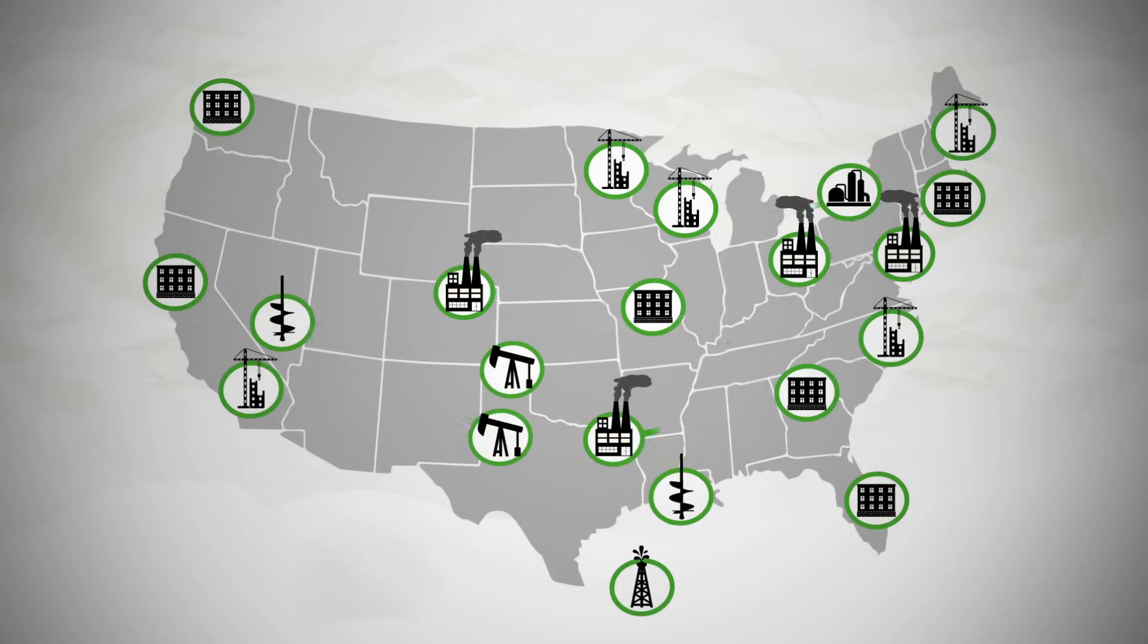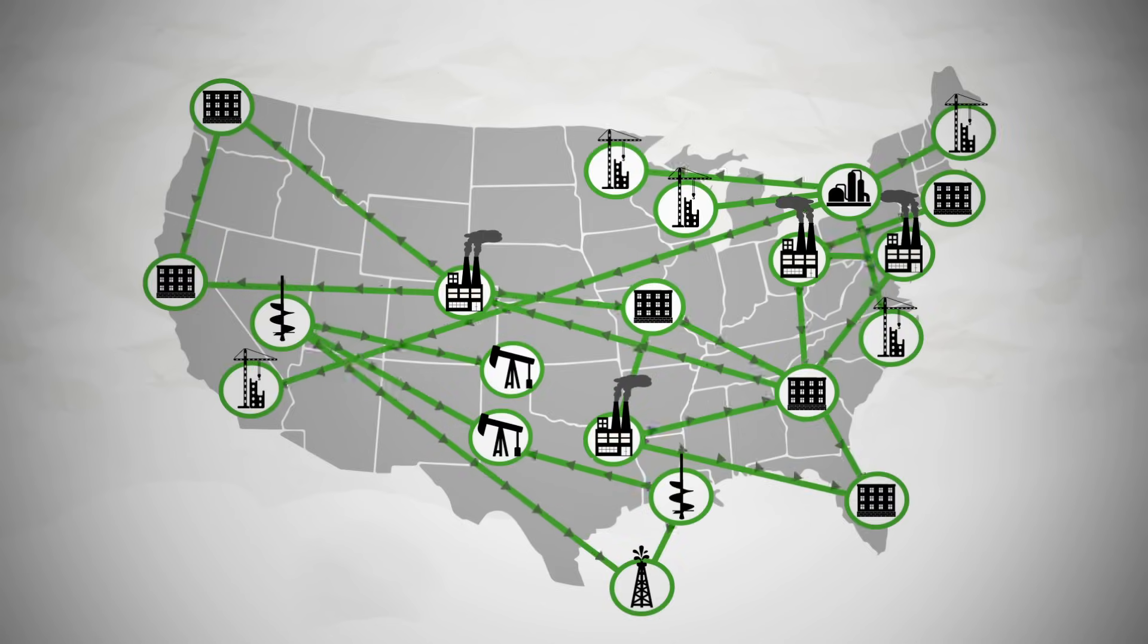Do you recall from the previous videos how the price system coordinates the actions of thousands of people all over the world in order to deliver flowers? Well, with price controls in place, the economy became discoordinated.